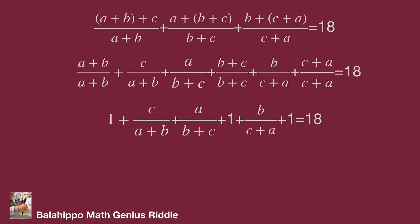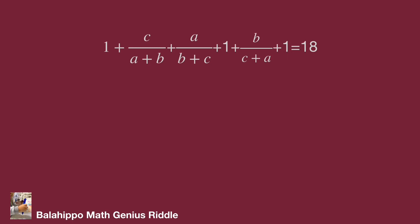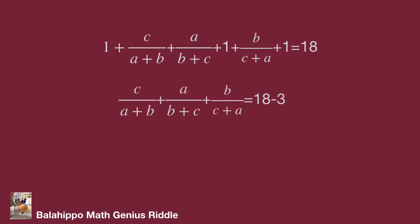Subtracting 3 from both sides of the equation, we get: c over (a plus b) plus a over (b plus c) plus b over (c plus a) equal to 15. That's the value we are looking for. Do you get the same value? Hope you enjoy the video. Thank you.